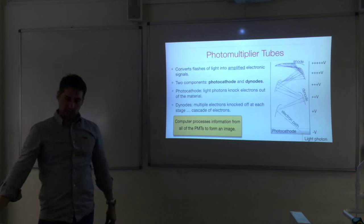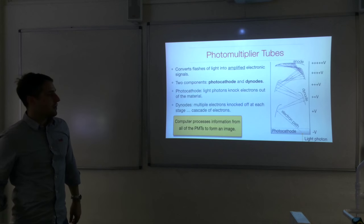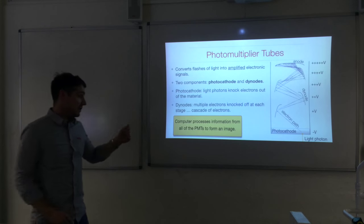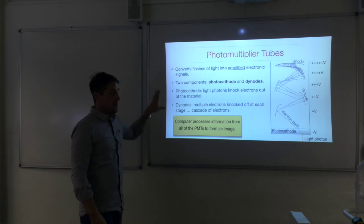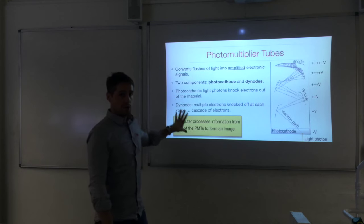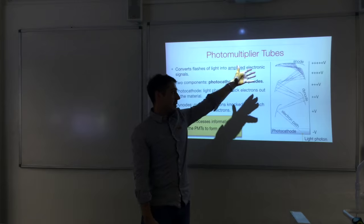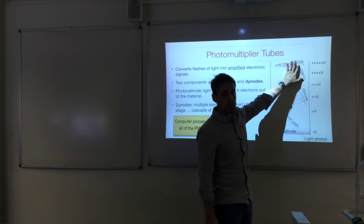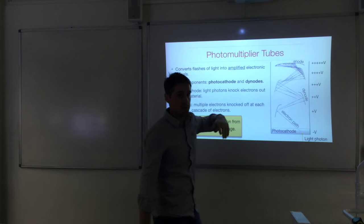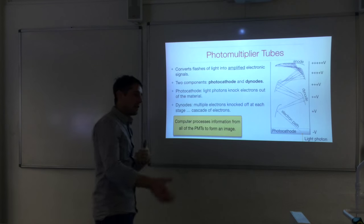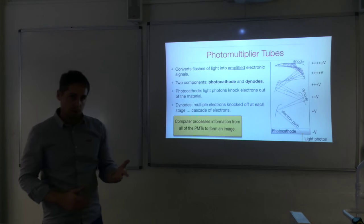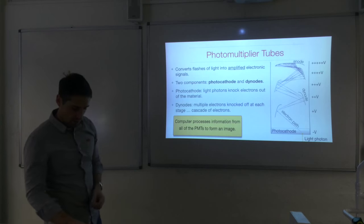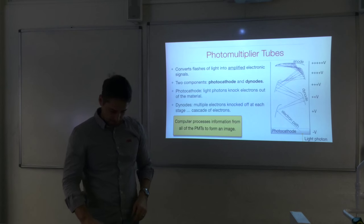The next stage after the photomultiplier tubes is the computer, which processes the information output from the photomultiplier tubes and turns it into an image that the radiologist can understand.